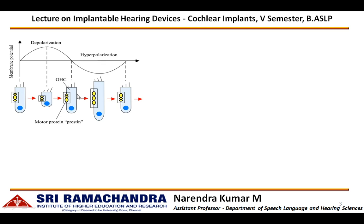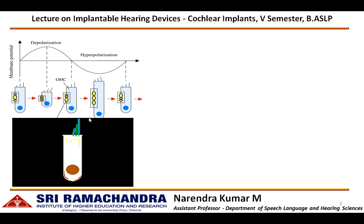The outer hair cells change their shape depending upon their activation, thereby enhancing soft sounds. The outer hair cells get activated for soft sounds and maximize the amplitude of vibration of the cochlear partition. Hence, they are called cochlear amplifiers.